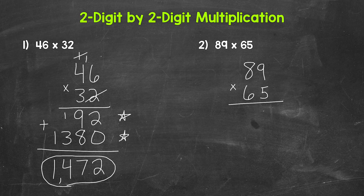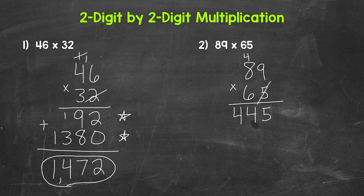We'll start with five times nine, which gives us 45. Carry the four. Then we have five times eight, which is 40, plus that four gives us 44. We are done with this five and done with this four.